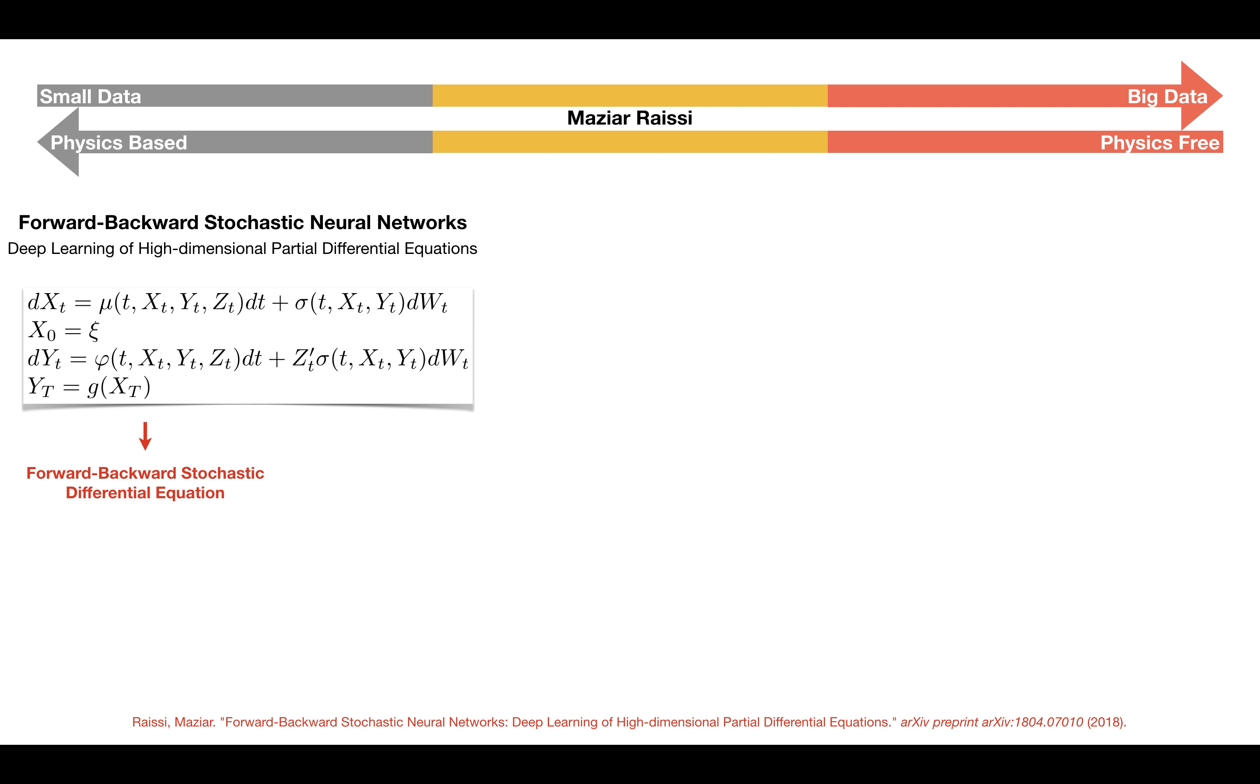Let us start by considering the general form of a system of coupled forward-backward stochastic differential equations. These equations appear naturally in areas such as stochastic control, economics, and mathematical finance. Here, W is a vector-valued standard Brownian motion. The stochastic processes X, Y, and Z constitute a solution to this set of equations.